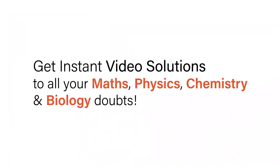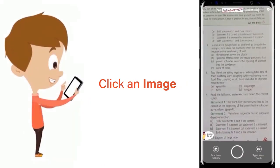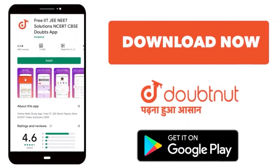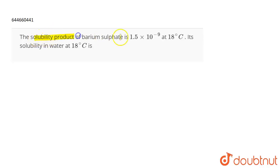With Doubtnut, get instant video solutions to all your maths, physics, chemistry, and biology doubts. Just click the image of the question, crop the question, and get instant video solution. Download Doubtnut app today. The question is: the solubility product of barium sulfate is 1.5 into 10 power minus 9 at 18 degree Celsius. What is the solubility in water at 18 degree Celsius?